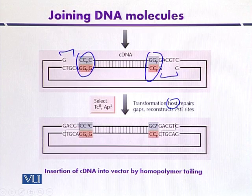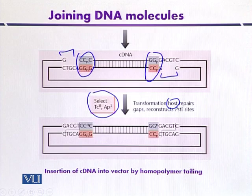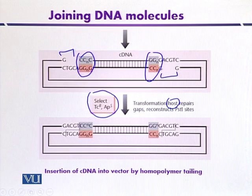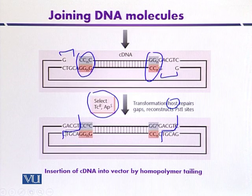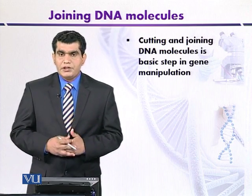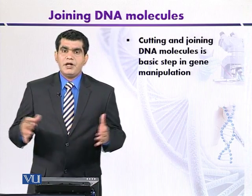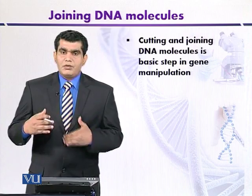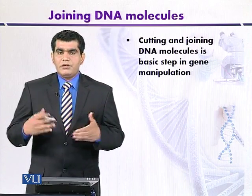After transformation, the host organisms are grown on a medium supplemented with tetracycline or ampicillin. Only those transformants or recombinants that carry the genes for tetracycline or ampicillin resistance will be able to grow on this medium. Another advantage is that because the recombinant DNA contains the site for PstI, the target cDNA can again be excised from the recombinant DNA molecule. Finally, we can conclude that cutting and joining of DNA molecules mediated by different types of enzymes is a very important tool in the field of gene manipulation.